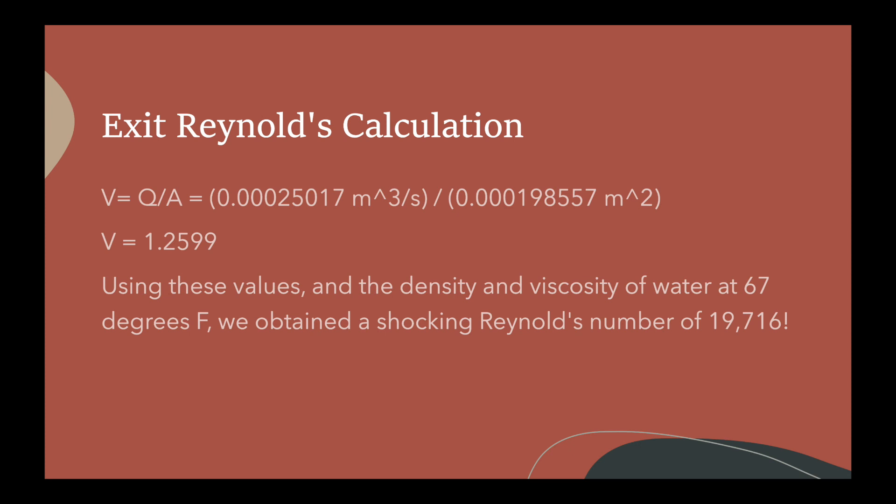This number represents the turbulence if this fluid was just flowing through a pipe of the diameter of the exit nozzle. However, it's not. It's free-flowing fluid and greatly altered by the measures we took to make it laminar.